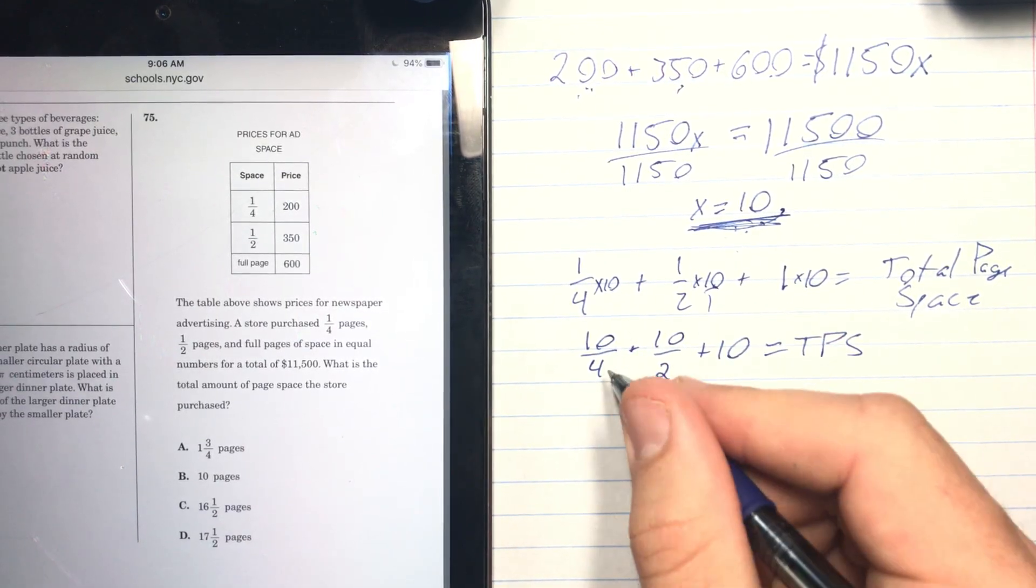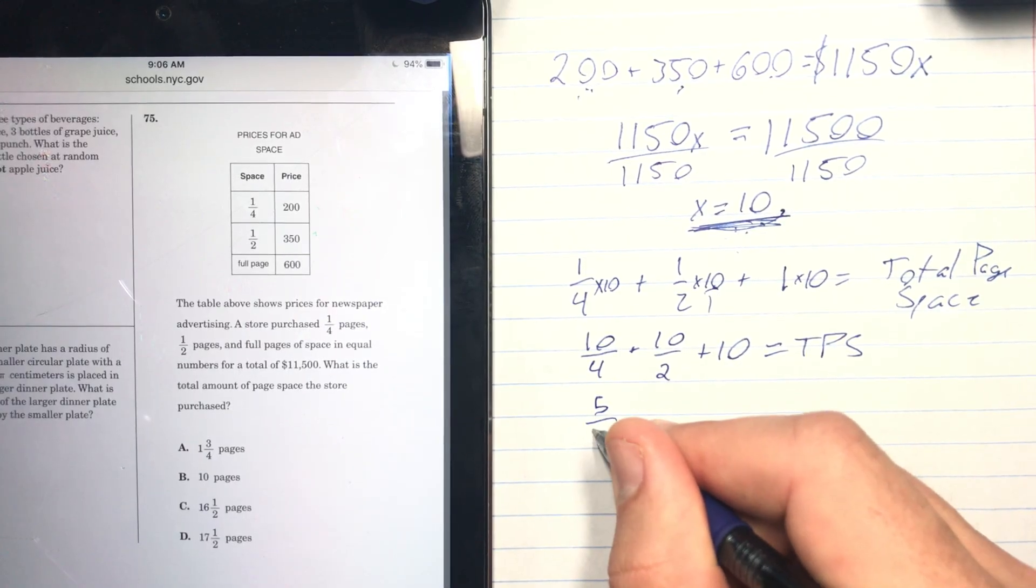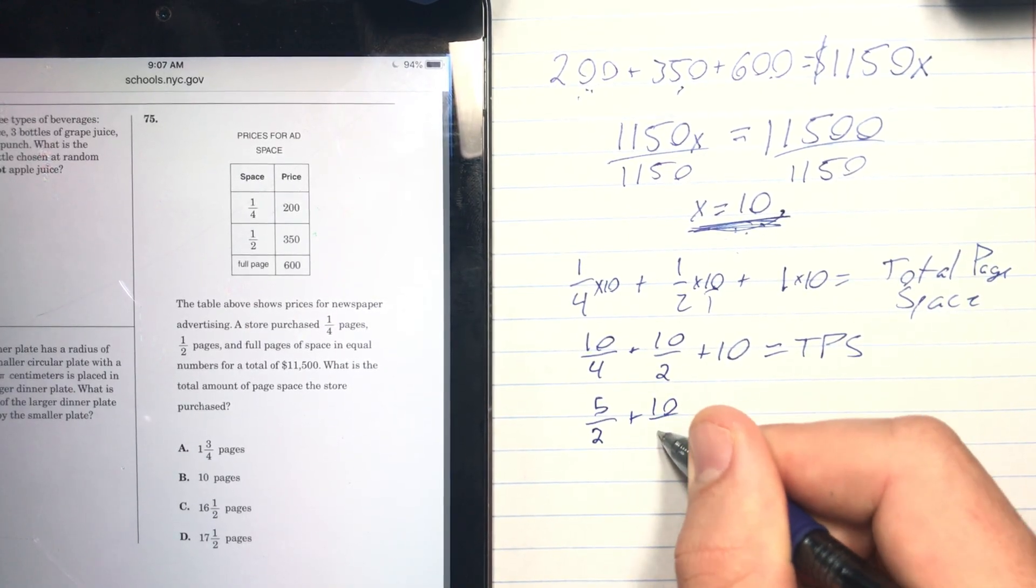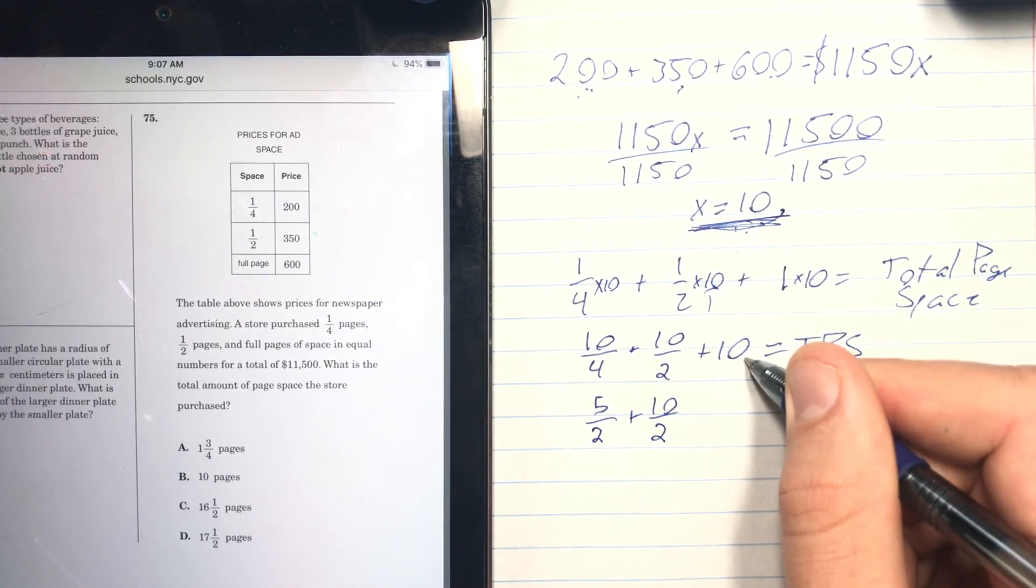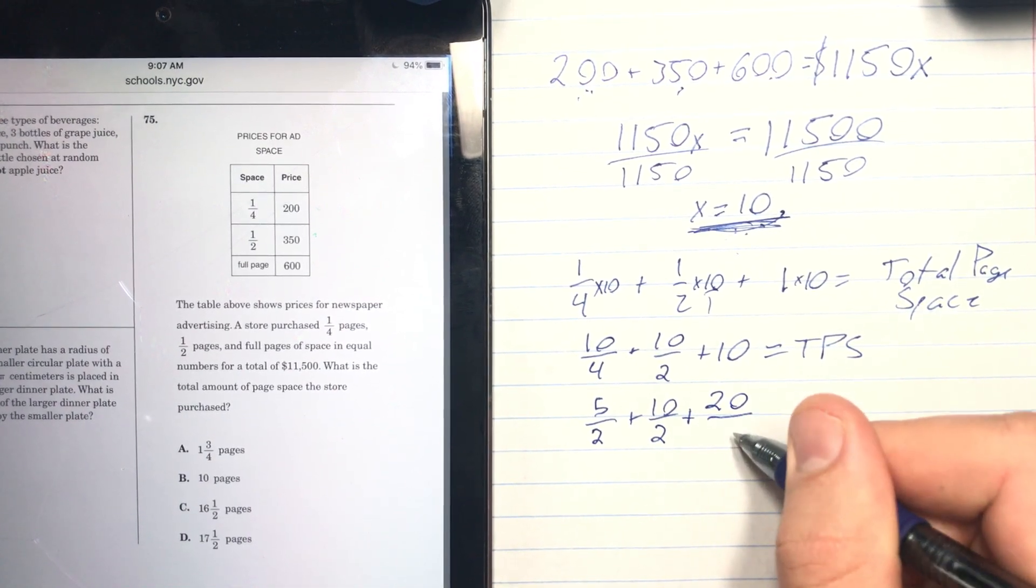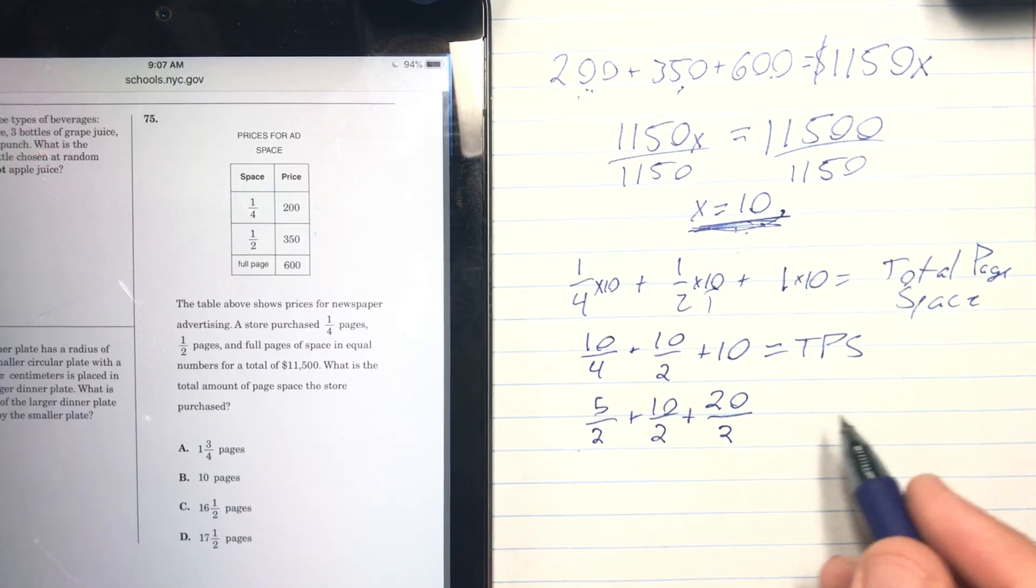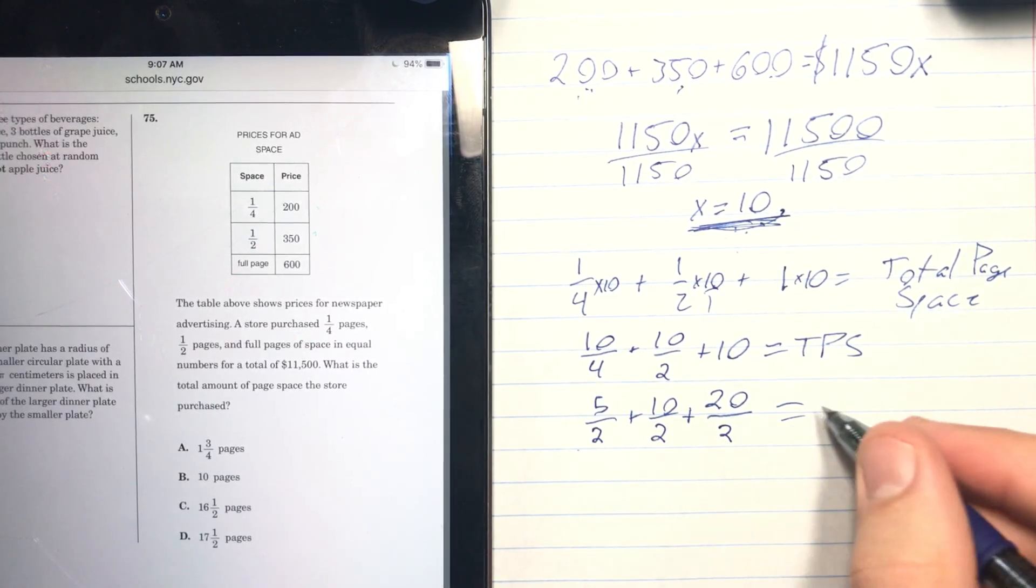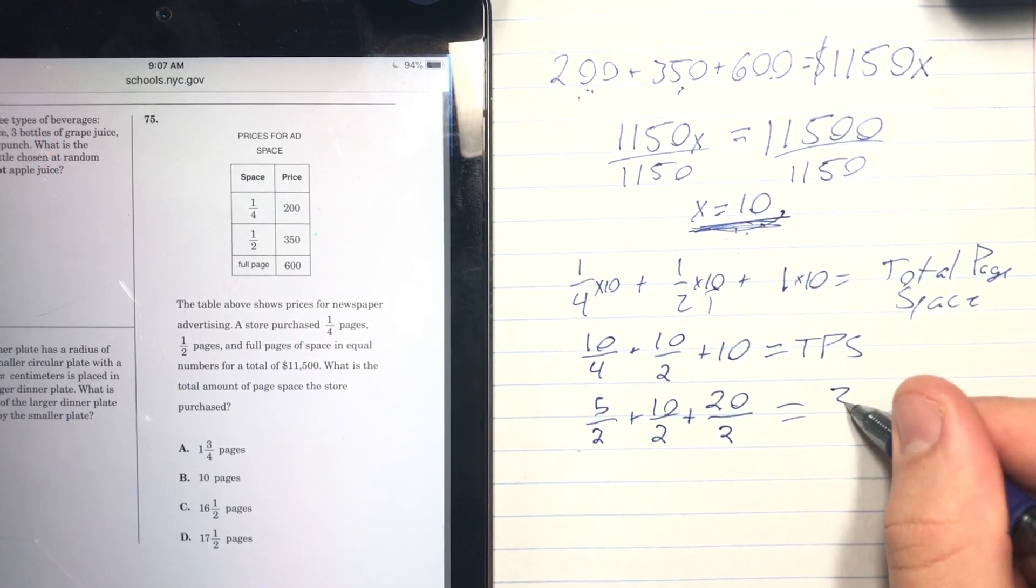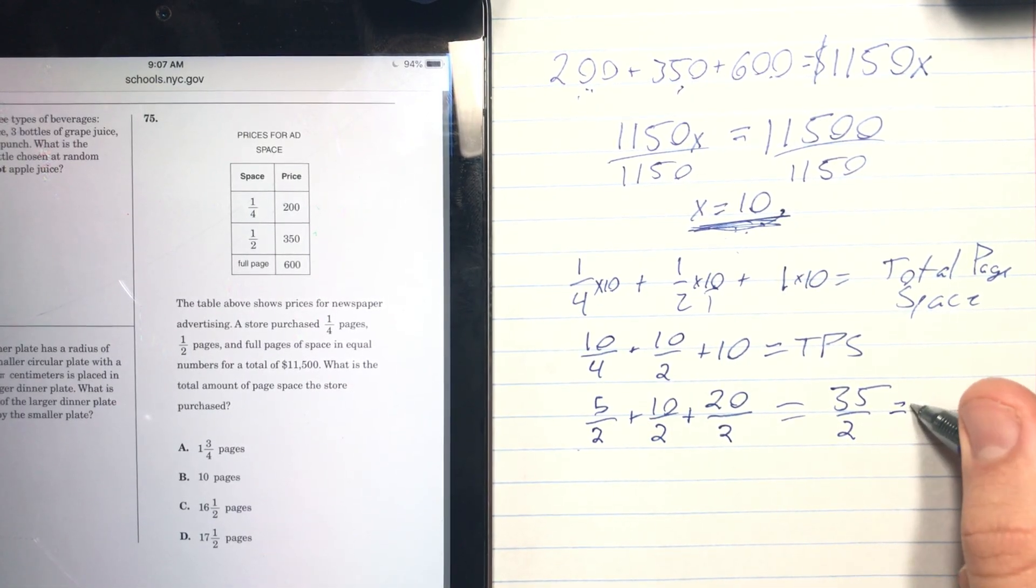I'm going to simplify this so that it has a base of 2. What we end up getting is 5/2 plus 10/2, and I'm going to multiply this by 2/2 so that I can get a nice fraction addition problem. Now we have all of our denominators the same. I can add it up, so this equals 35/2. If you simplify that, because they have them in this form, that would be 17 and one half. So that is our answer: D.